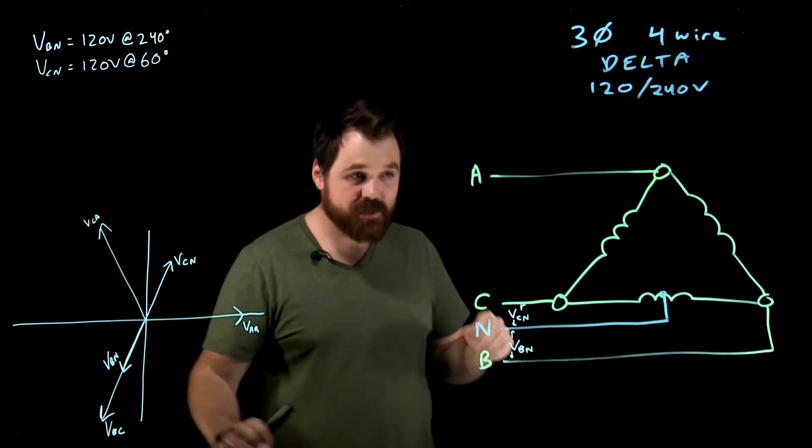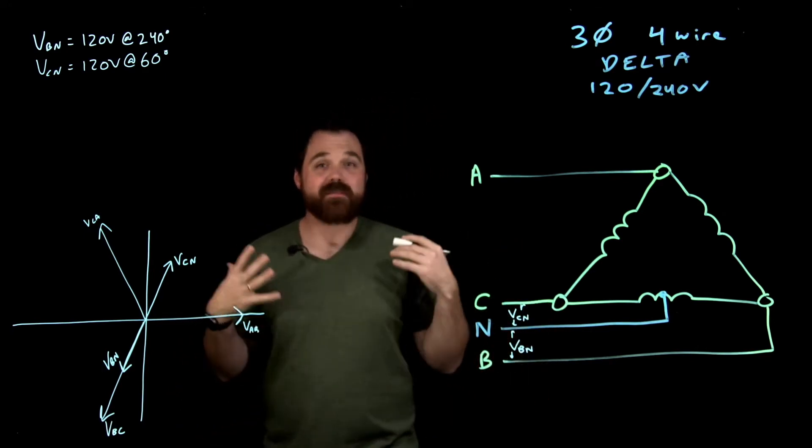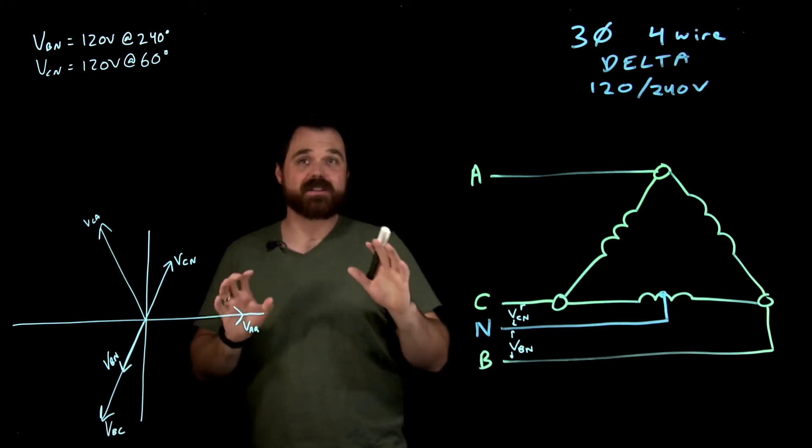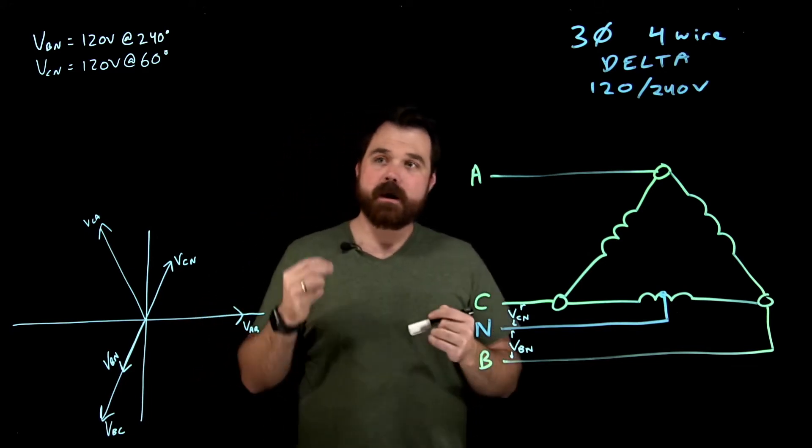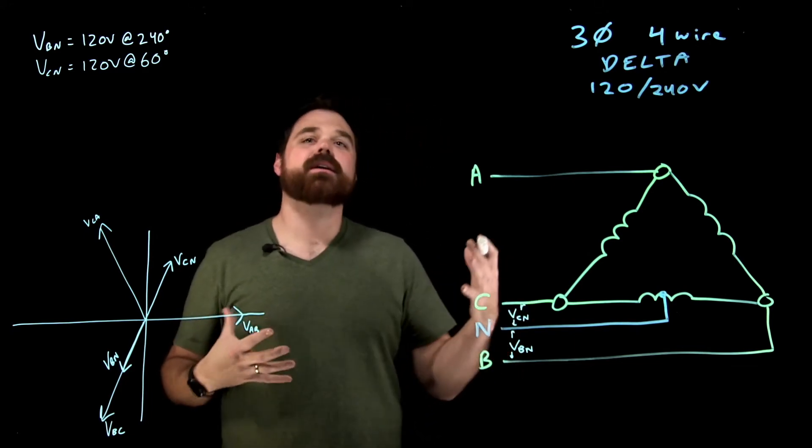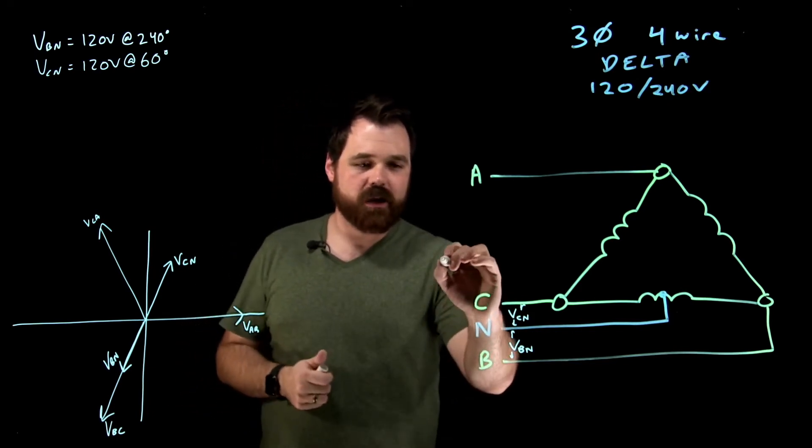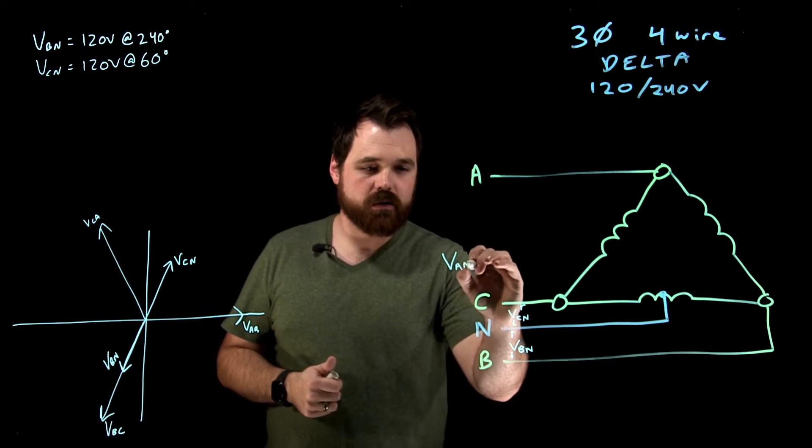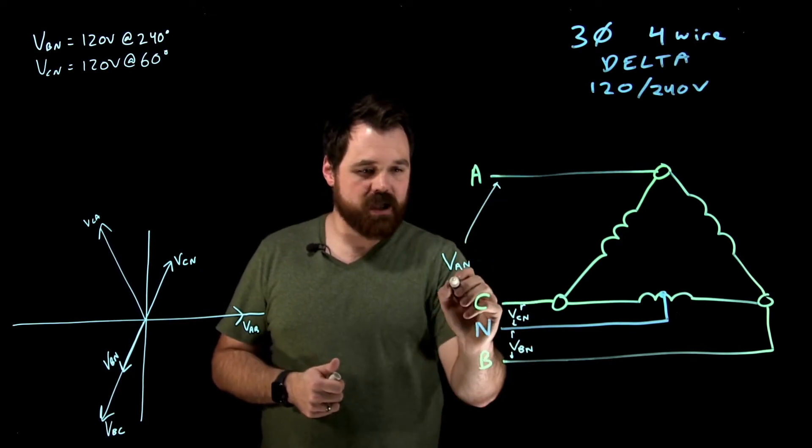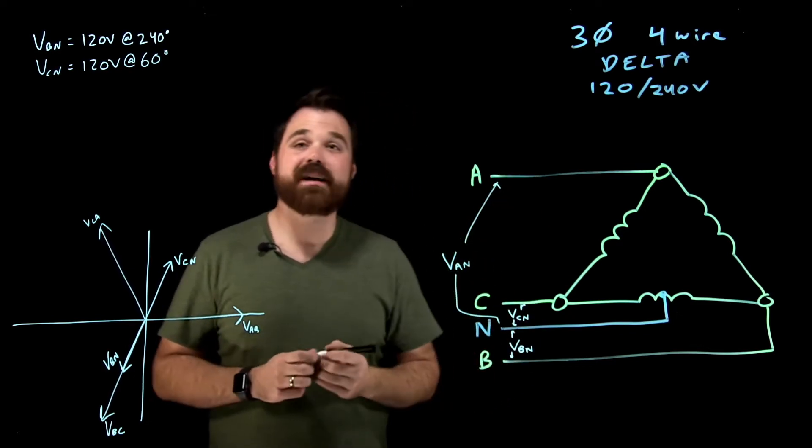Now, what we end up with is something very special here. If we were to take a meter, and this is something we cannot do, but the measurement is important and why the code rules come into play are important. What if we were to measure VAN? So measure from A to my neutral.